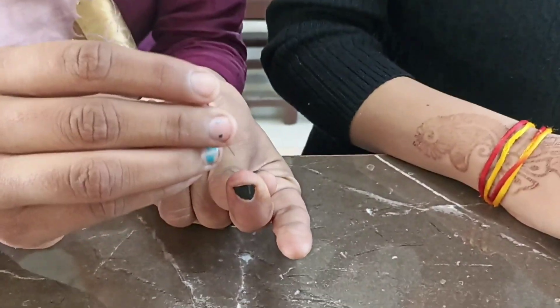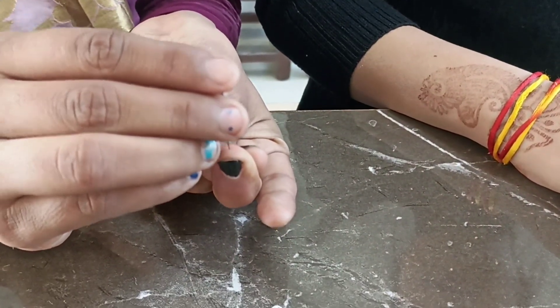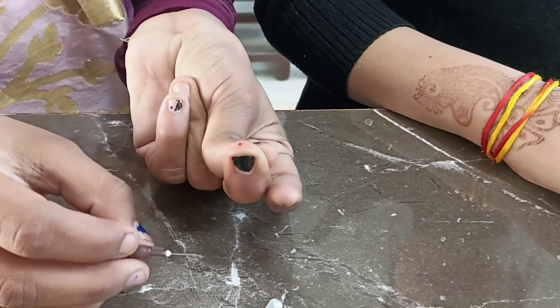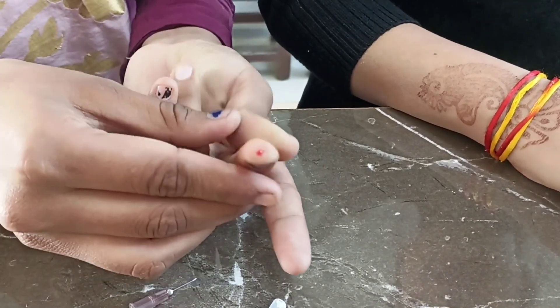Prick the finger with the pricking needle. Take the oozing blood out.